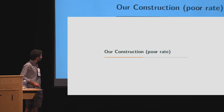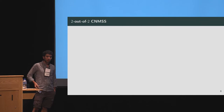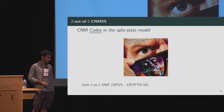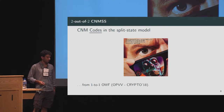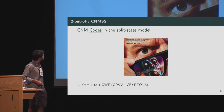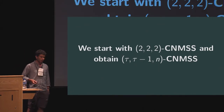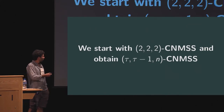For our construction with full rate, we want to do a tau-out-of-n secret sharing. Starting with the simplest case: a two-out-of-two continuously non-malleable secret sharing, which is equivalent to a continuously non-malleable code in the split-state model. These already exist and can be built from one-way functions, from work by Ostrowski, Persiano, Venturi, and Visconti from last year at Crypto. The technical contribution of this work is: starting with a two-out-of-two continuously non-malleable secret sharing, we obtain a tau, tau-minus-one continuously non-malleable secret sharing.